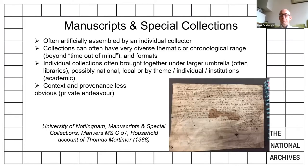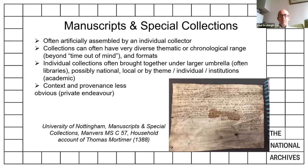Archives generally differ from manuscripts and special collections. These institutions often hold artificially assembled collections, often those of a single individual, with a very diverse thematic or chronological range and different formats. Individual collectors often brought together collections under a large umbrella — often university libraries — organised by theme or by individual institutions. It's not always evident what the context and provenance for individual items are, because private purchasing and collecting over time can only be traced so far.